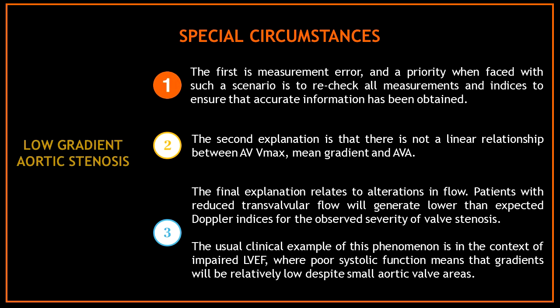The first reason is measurement error, and a priority when faced with such a scenario is to recheck all measurements and indices to ensure that accurate information has been obtained. The second explanation is that there is not a linear relationship between aortic valve V-max, mean gradient, and aortic valve area. The final explanation relates to alterations in flow — patients with reduced transvalvular flow will generate lower than expected Doppler indices for the observed severity of valve stenosis.